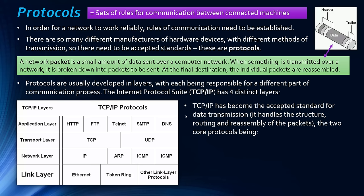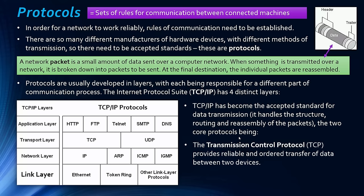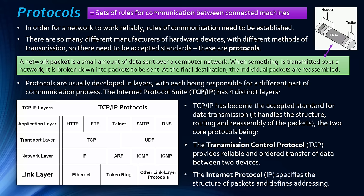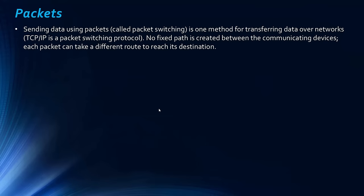The two core protocols are TCP — Transmission Control Protocol — which provides reliable and ordered transfer of data between connected devices, and IP — Internet Protocol — which specifies the structure of the packets and defines the addressing. TCP/IP uses a method of transferring data called packet switching, where no fixed path is created between devices, meaning each packet could take a different route to get to the destination, allowing it to take the fastest available route.